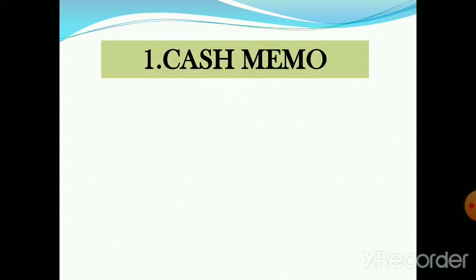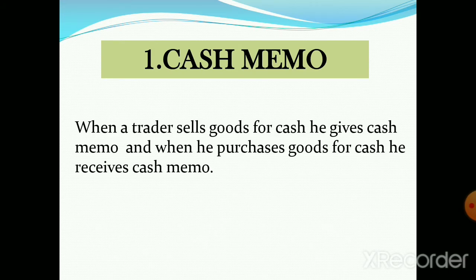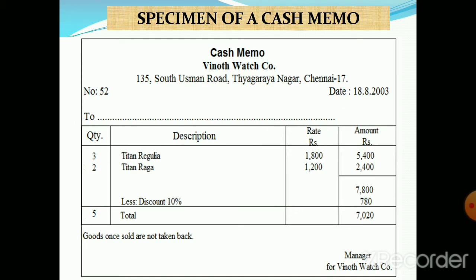Starting with the first type of source document: cash memo. When a trader sells goods for cash, he gives a cash memo, and when he purchases goods for cash, he receives a cash memo. Details regarding the item, quantity, rate, and total price are mentioned in the cash memo. Since cash transactions are always recorded in the cash book, these transactions are recorded on the basis of cash memos.